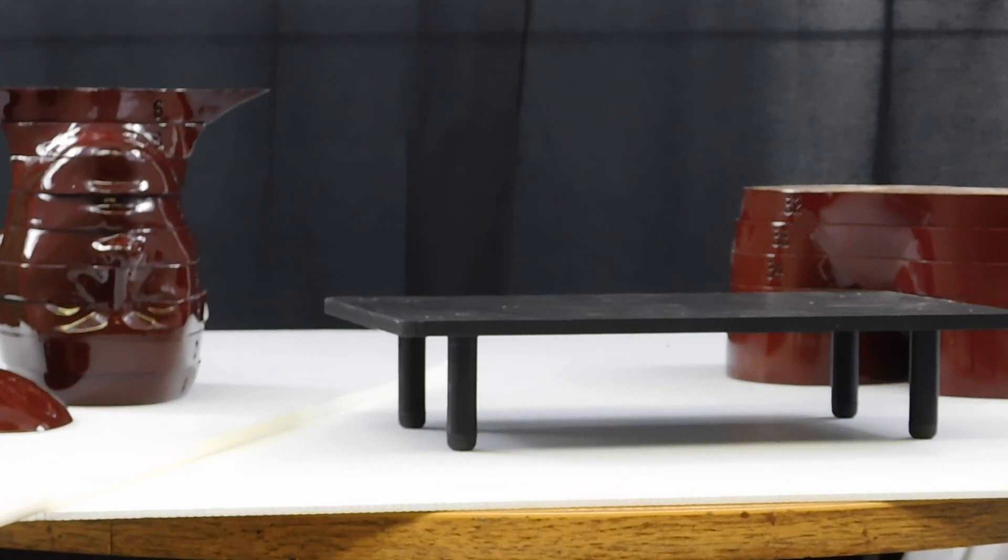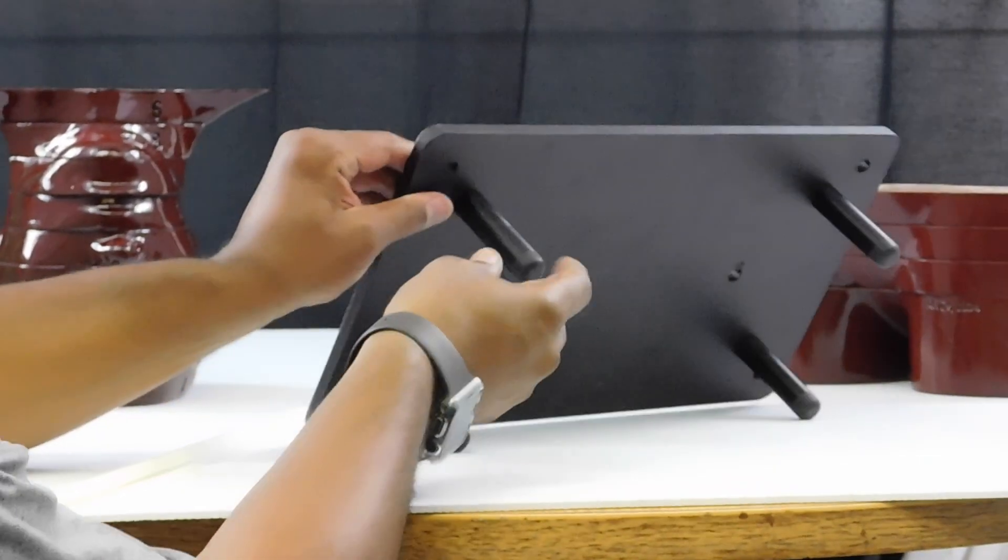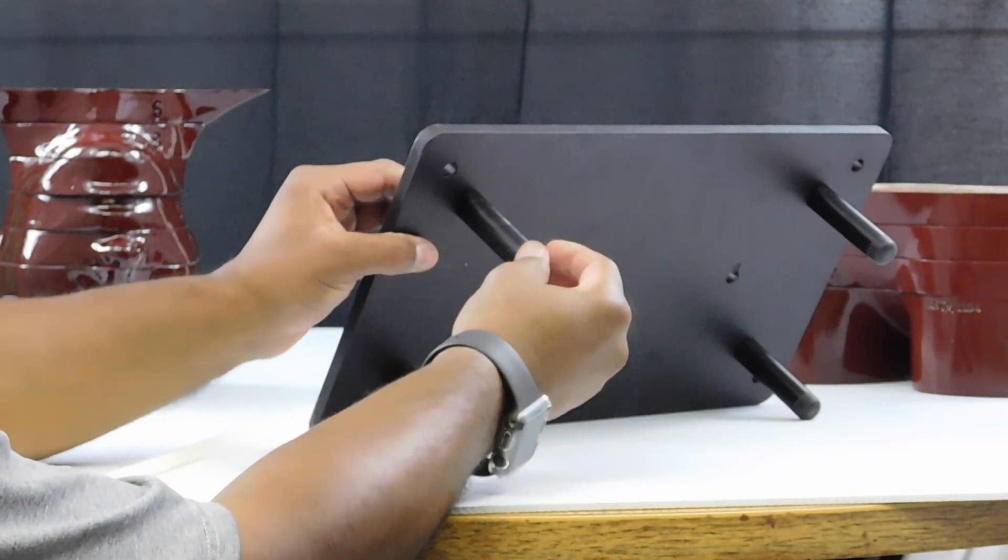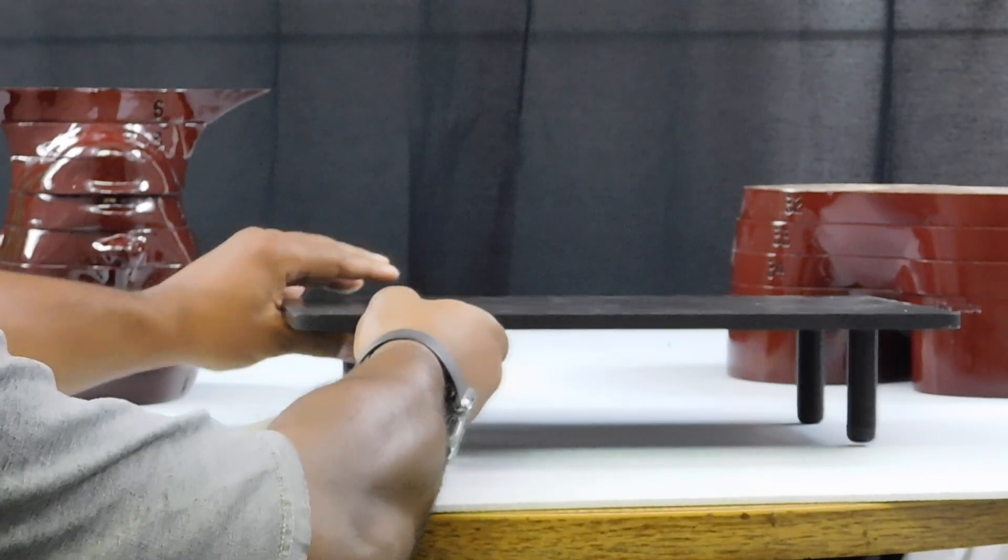To start the assembly of your ART Phantom, attach the legs to the base structure with the screws provided.